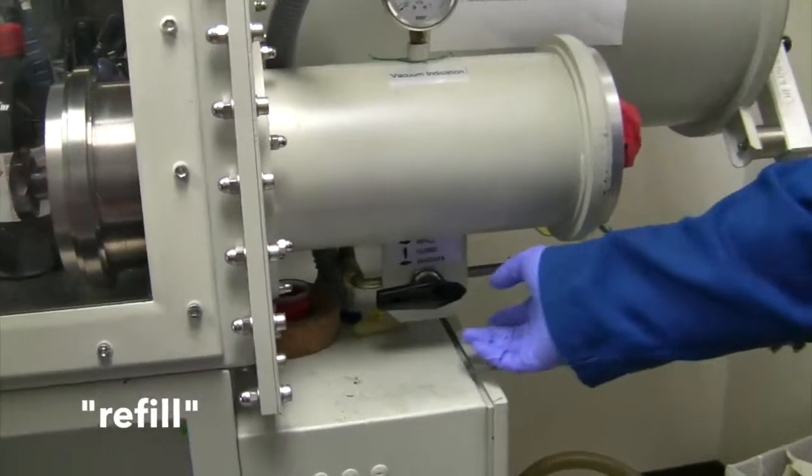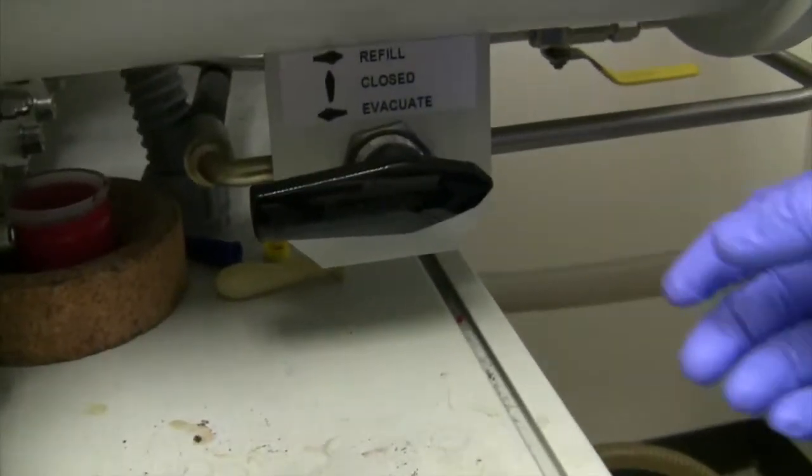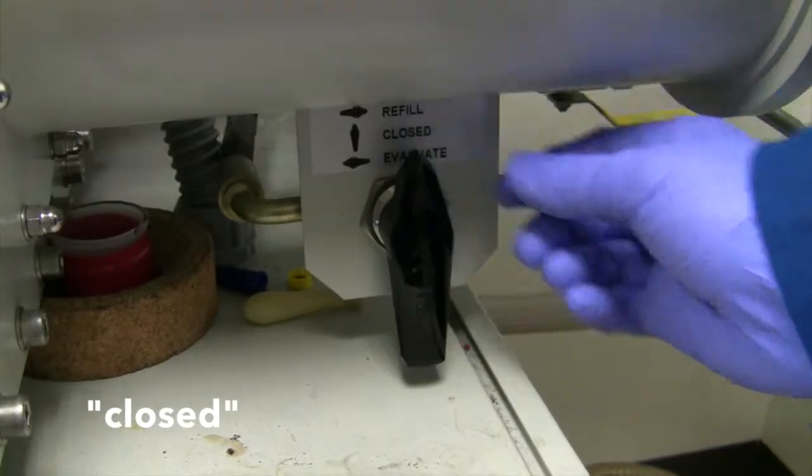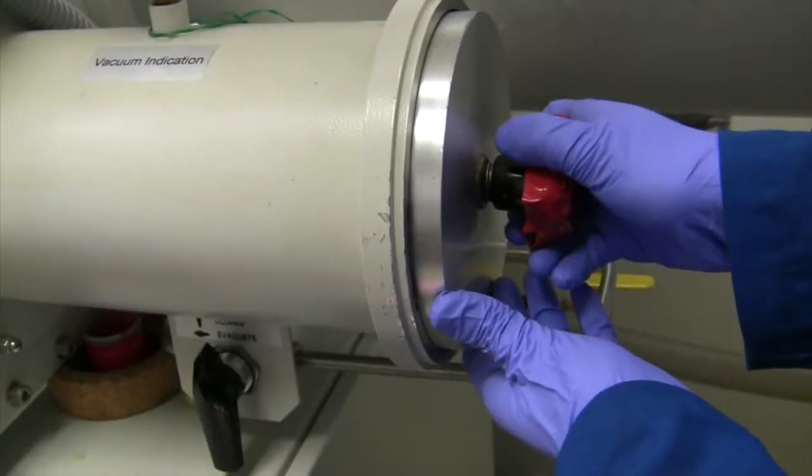To open the small antechamber, you must go from the evacuate position to refill. Once the chamber has filled with nitrogen gas, you can now return to closed and open the chamber door.